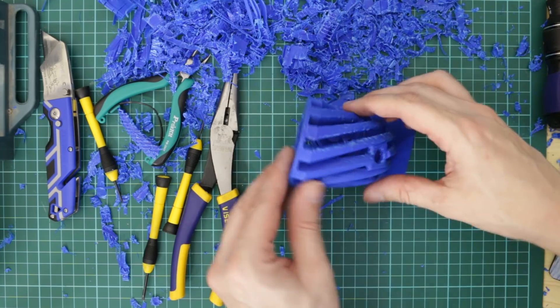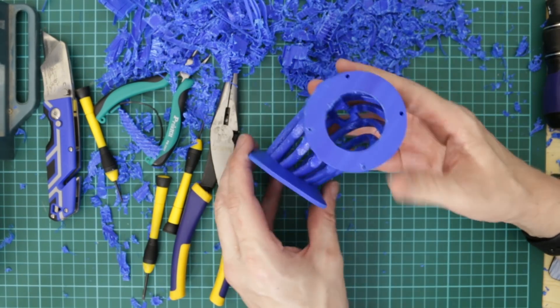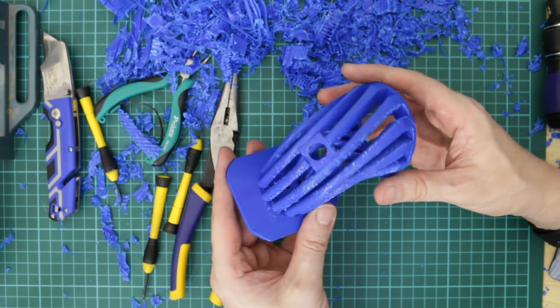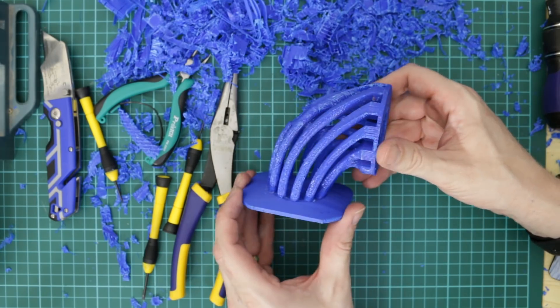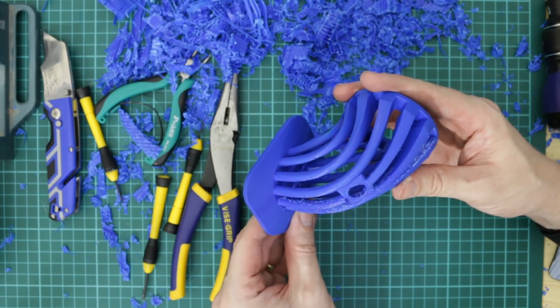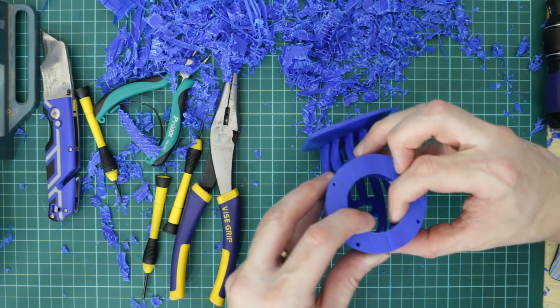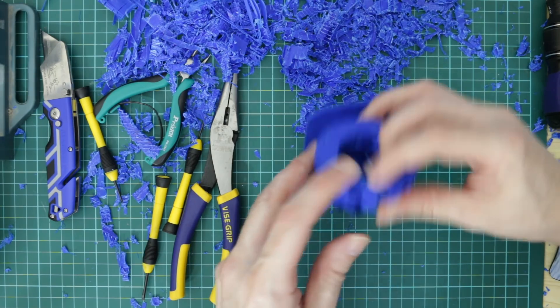So two hours, 40 minutes later, finally managed to get all of the support material removed. It's a little bit rough around the edges so I might try sanding it. A bit devastated there's a crack along there so I could always just glue that.